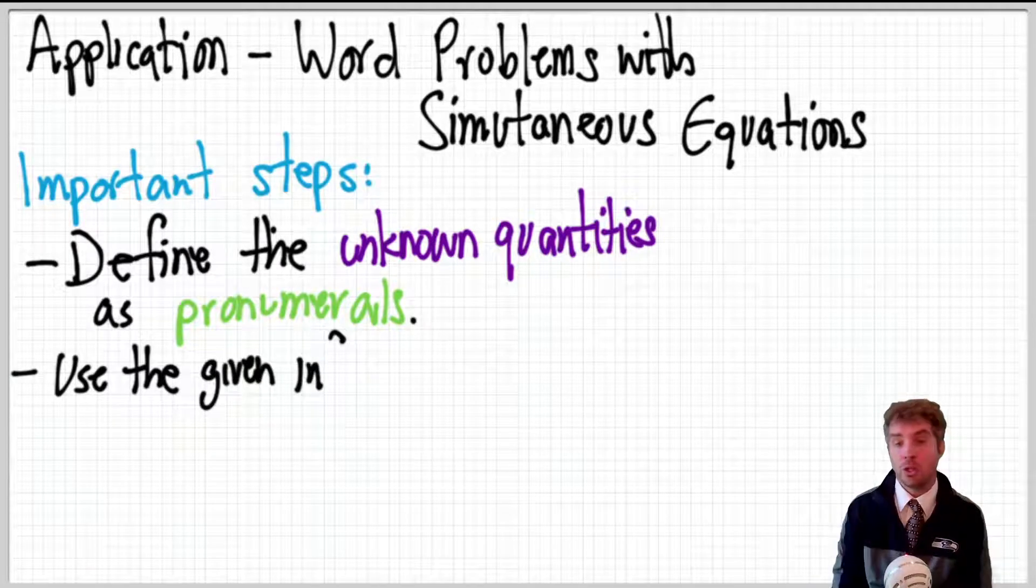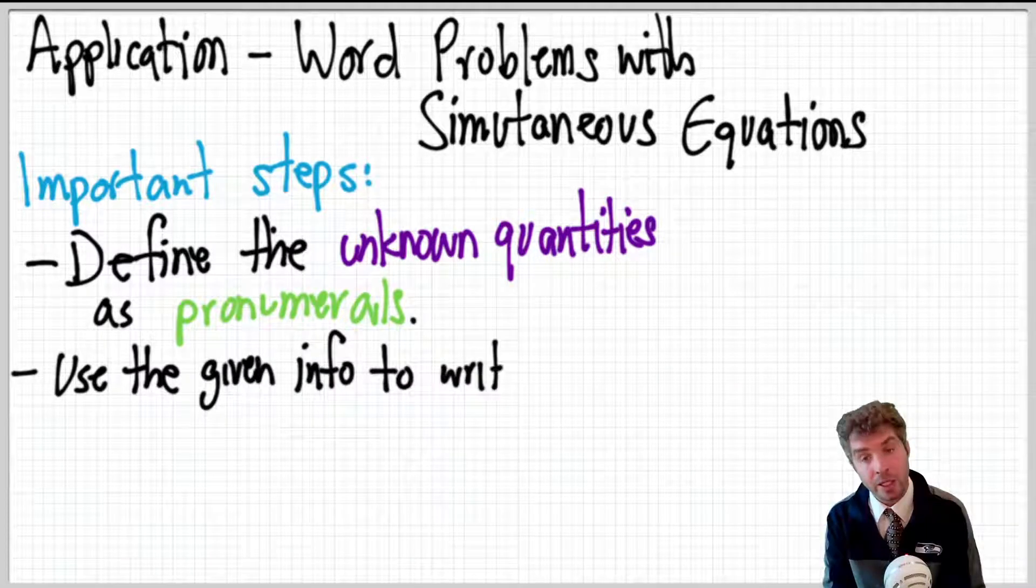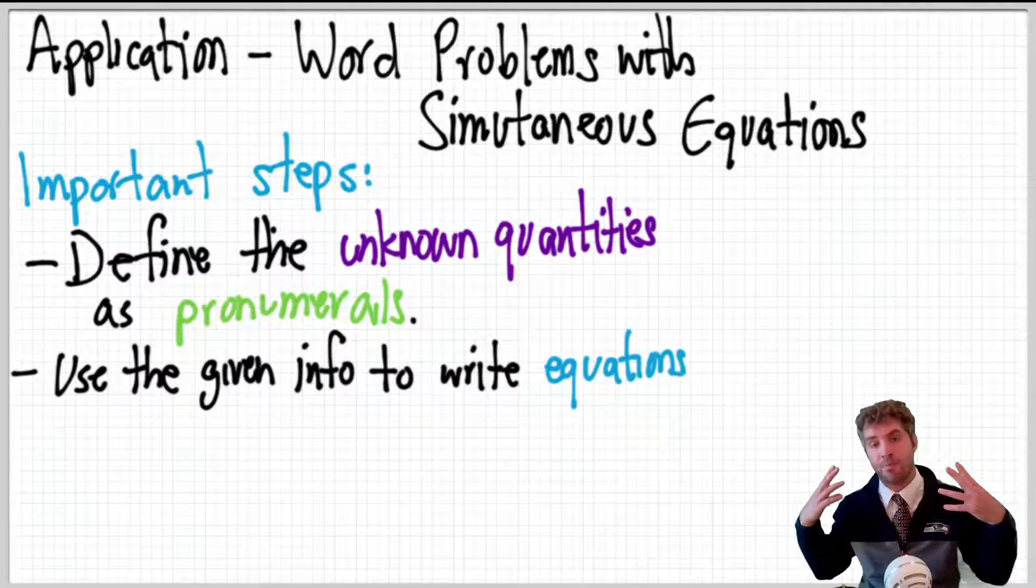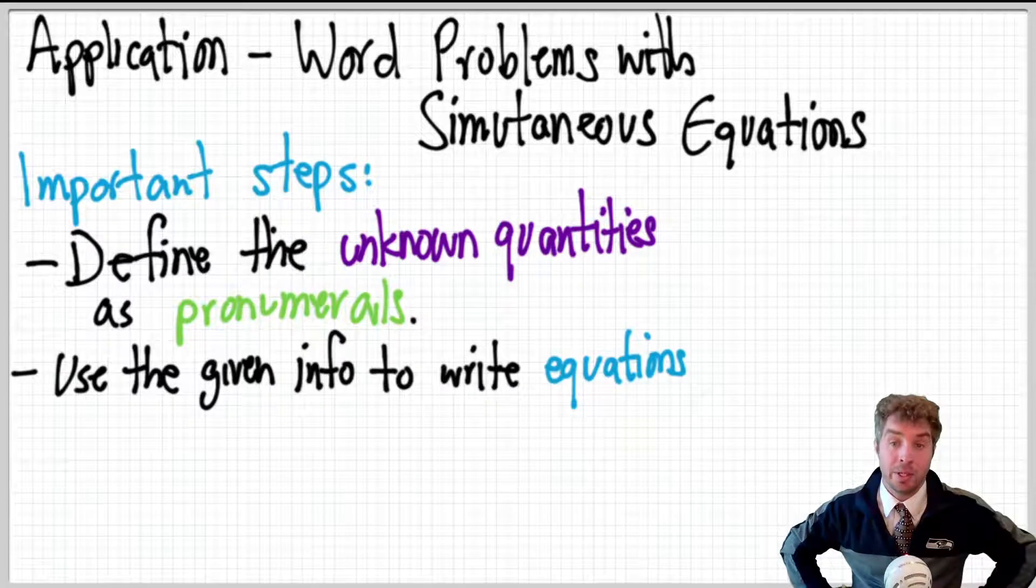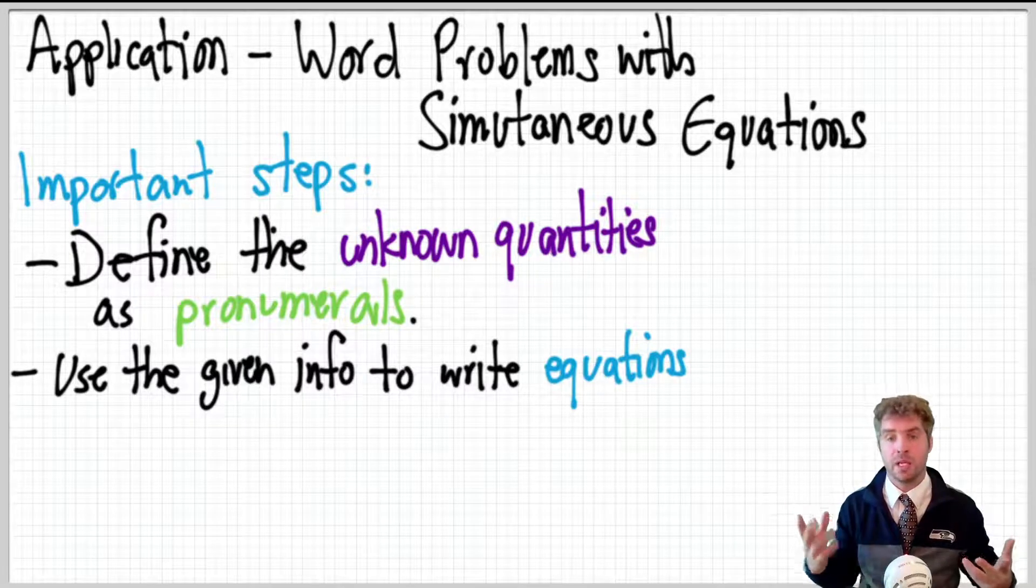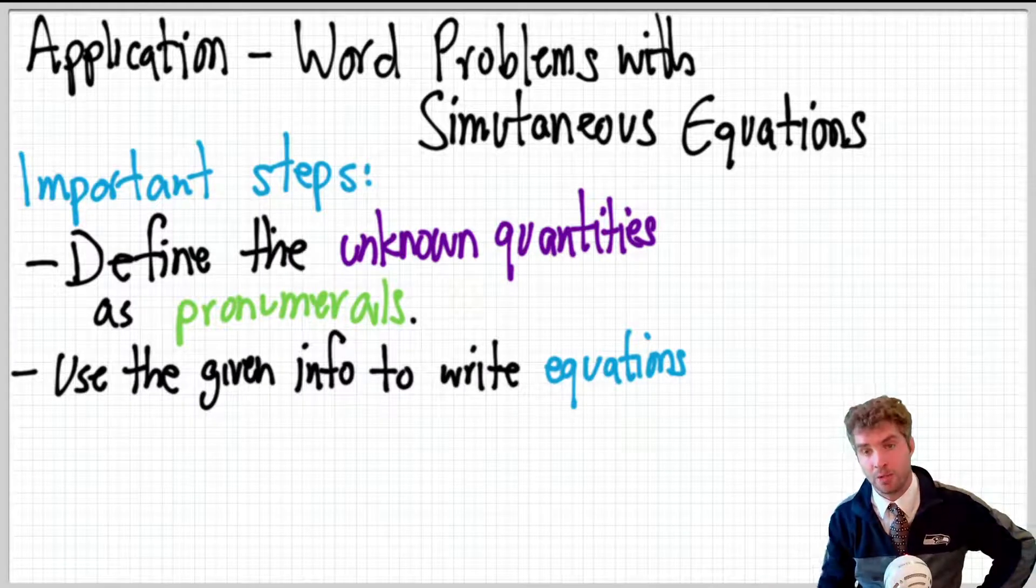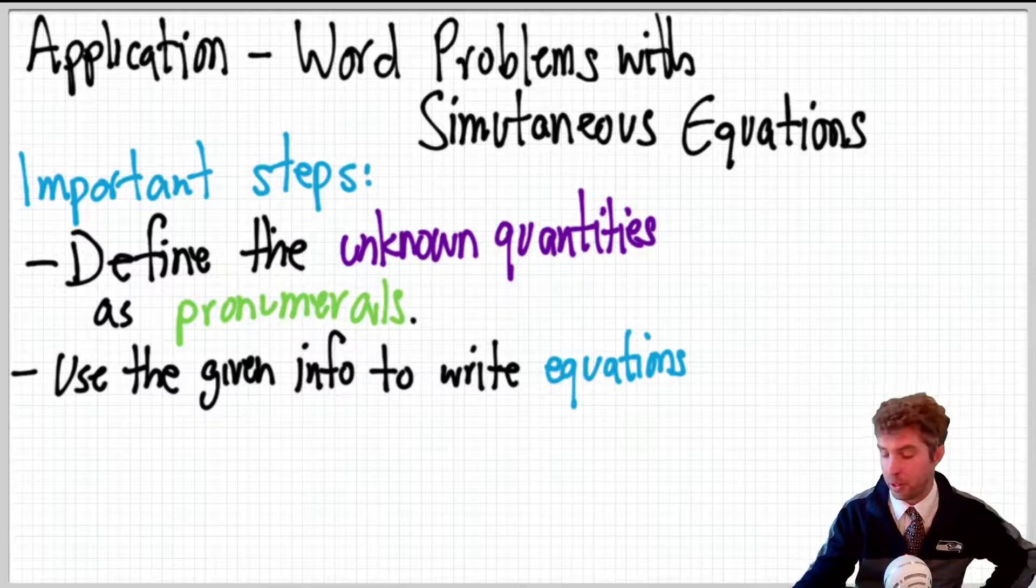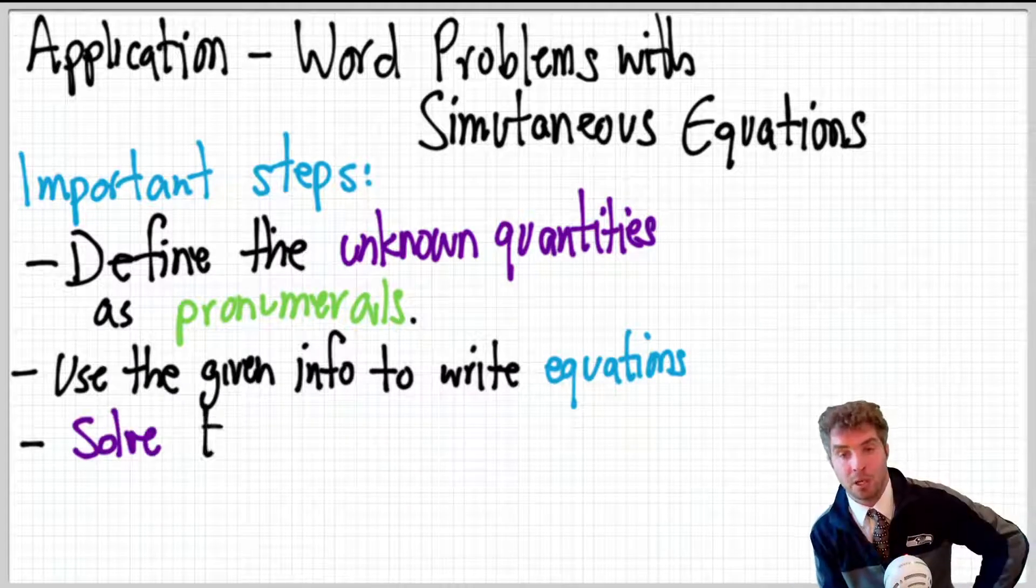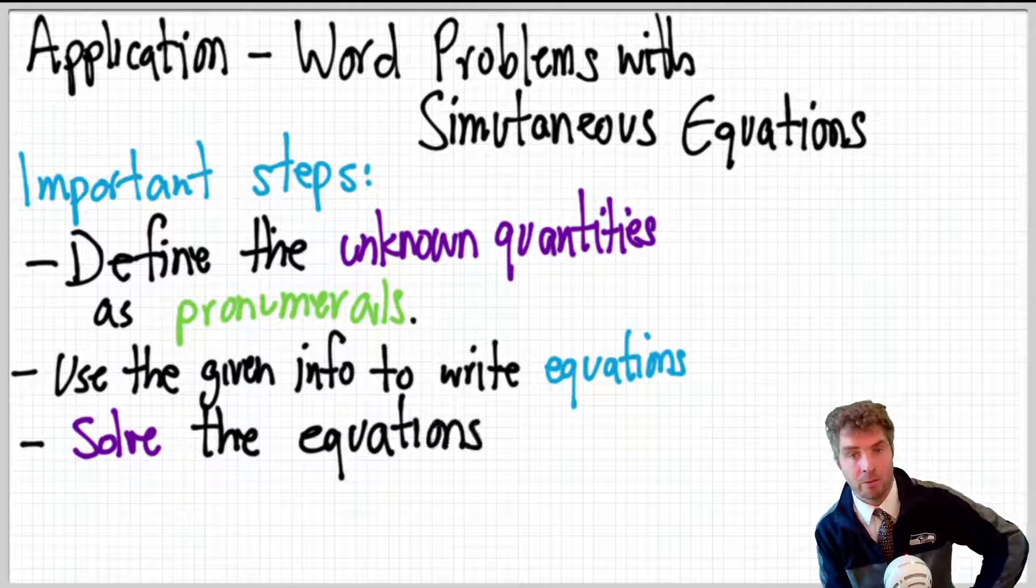The next step is to use the given information. So, you need to read the problem, interpret the information, and figure out what relationships do I know between these quantities and what equations can I write that represent the situation. That's the trickiest part, really. So, that's the part you should probably practice if this is a hard topic for you.